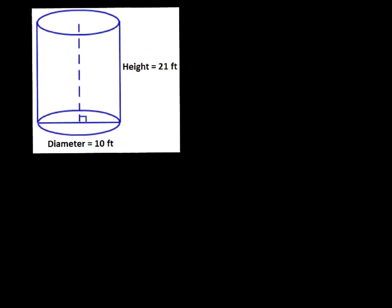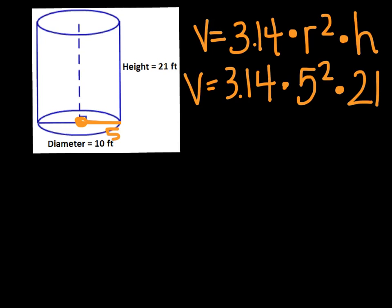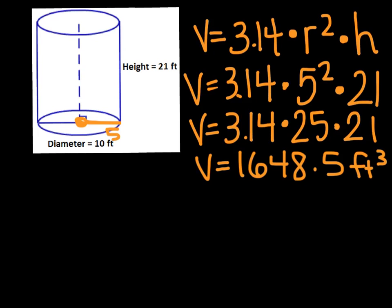Let's do a couple of practice problems. We'll find volume first. Volume is 3.14 times r squared times h. The radius is 5 (it's halfway across the diameter of 10), so: 3.14 times 5 squared times 21. Order of operations — do the squaring first: 3.14 times 25 times 21. Using a calculator, you get 1,648.5 feet cubed. That's how many little baby cubes can fit in there, which is why our label is to the third power.